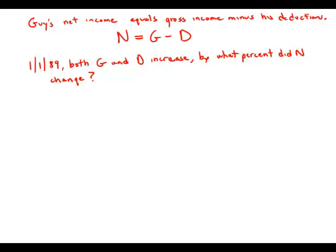Guy's net income equals gross income minus his deductions. I'm going to write this as N equals G minus D. On January 1st, 1989...